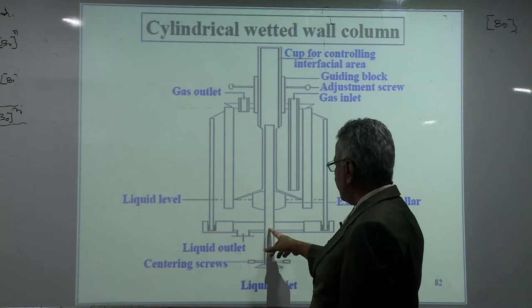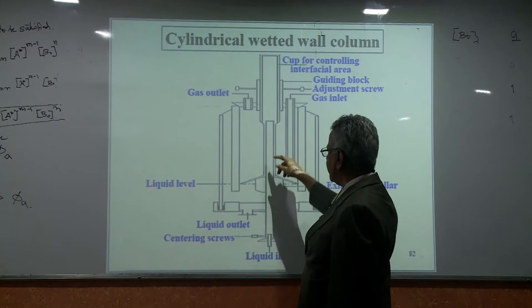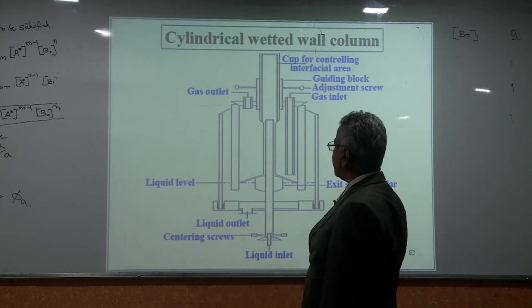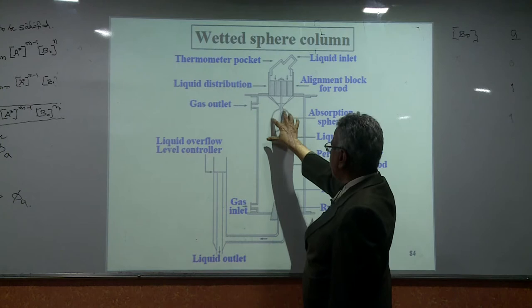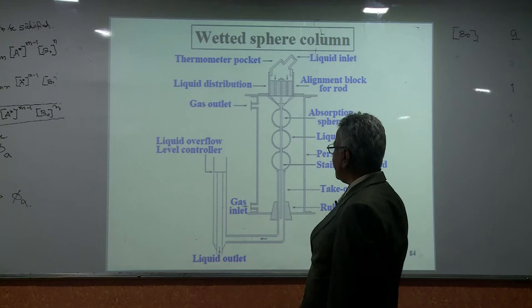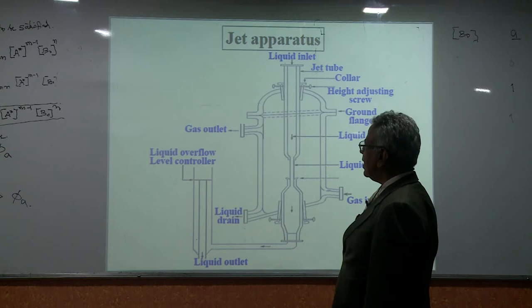This is the wetted wall column - liquid goes inside through the hollow pipe, comes to the top, overflows and comes down as a film. The gas is here, and the liquid finally enters a pool of liquid at the bottom, with a gas inlet and gas outlet. Next is wetted sphere: liquid falls on each sphere, flows as a film to the next sphere and the next, and is finally collected. Next is the laminar jet: one pipe makes the jet, another pipe picks it up, the area pi·d·L is the interfacial area, and mass transfer coefficient is varied by changing the flow rate.